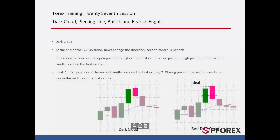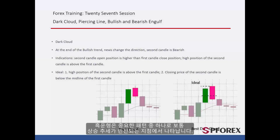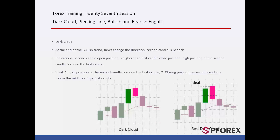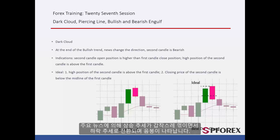Dark Cloud Candle is one of the most important patterns, and usually appears at the reversal point of an uptrend. While the trend is on its way up, significant news causes an abrupt change in direction toward the downside, followed by a bearish candle.